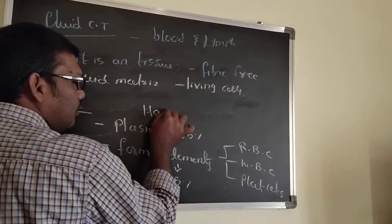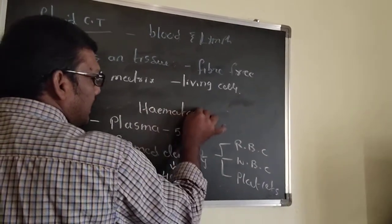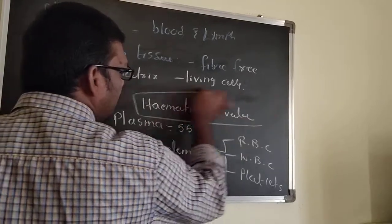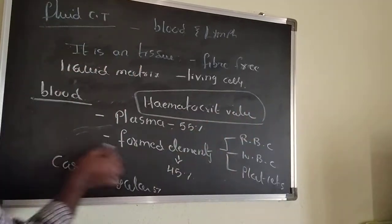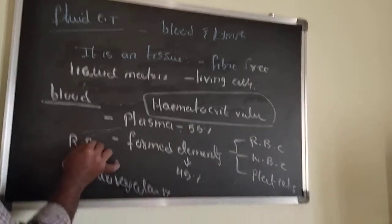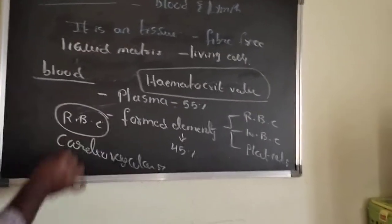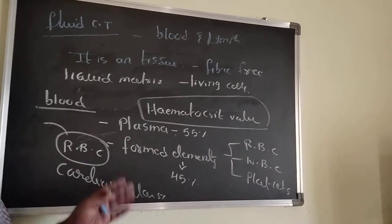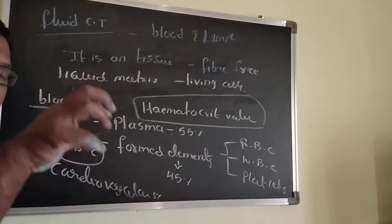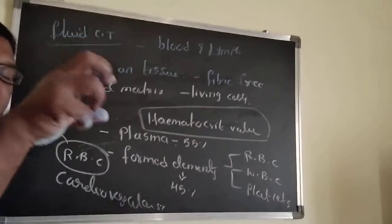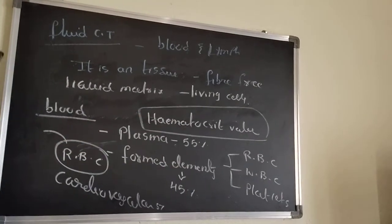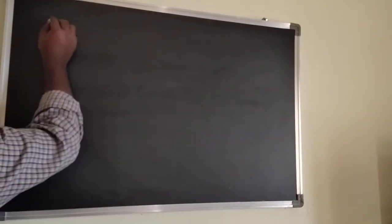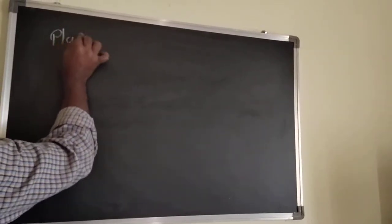What is hematocrit value? The volume of RBC occupied in the total volume of blood — that value is called the hematocrit value. Now we can discuss about the plasma.